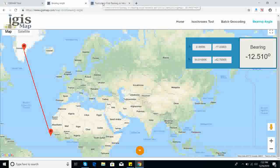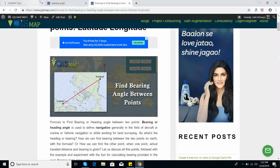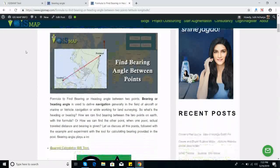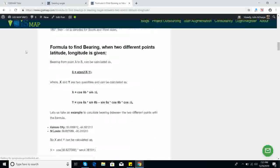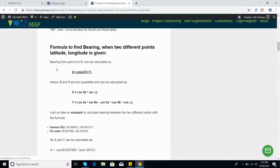The formula for finding bearing angle you can find at igsmap.com. Here is the formula: bearing angle from point A to B can be calculated as beta equals atan2(x, y).